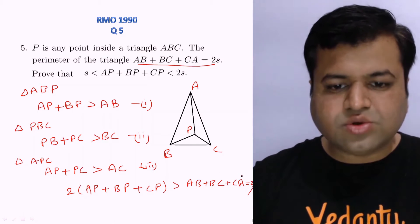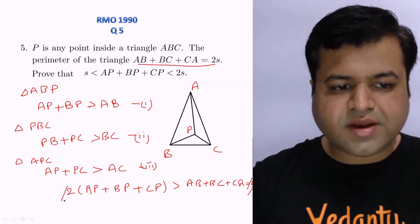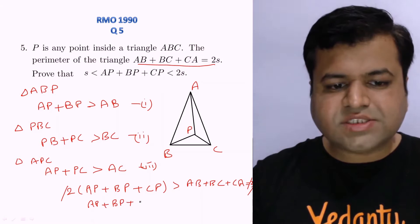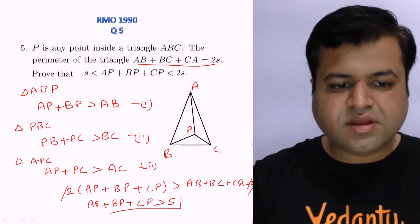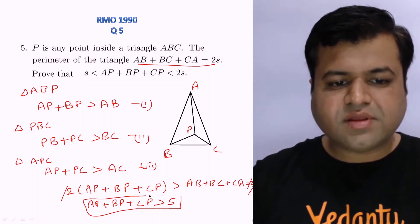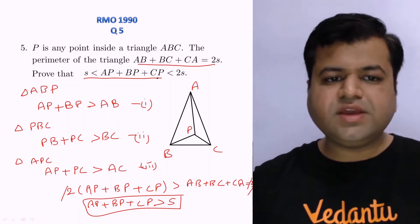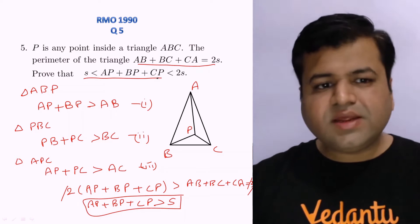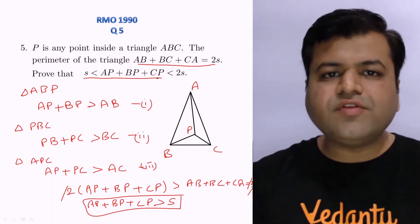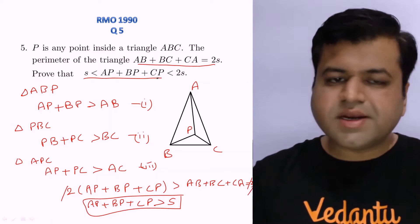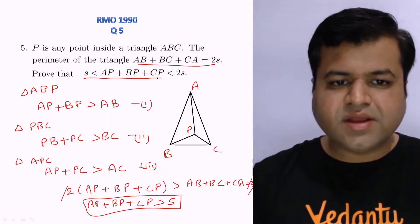AB + BC + CA equals 2S. So the factor of 2 cancels out, and we get AP + BP + CP > S. This was the first result we needed to prove. We simply used the triangular inequality — the sum of any two sides of a triangle is always greater than the third. Proof done.